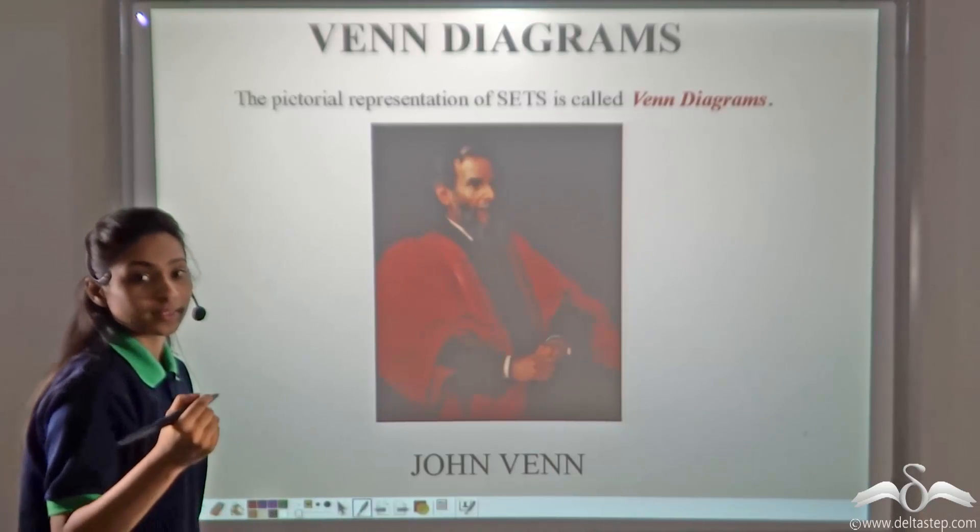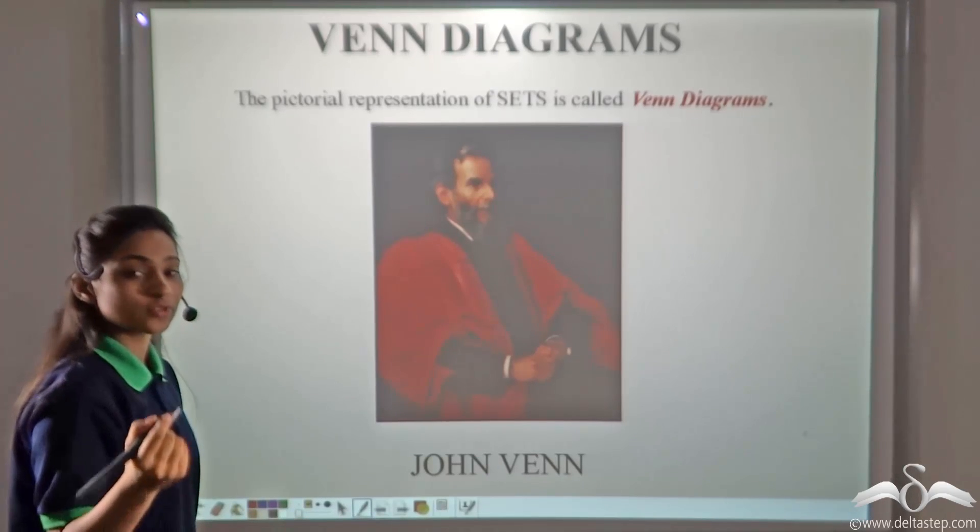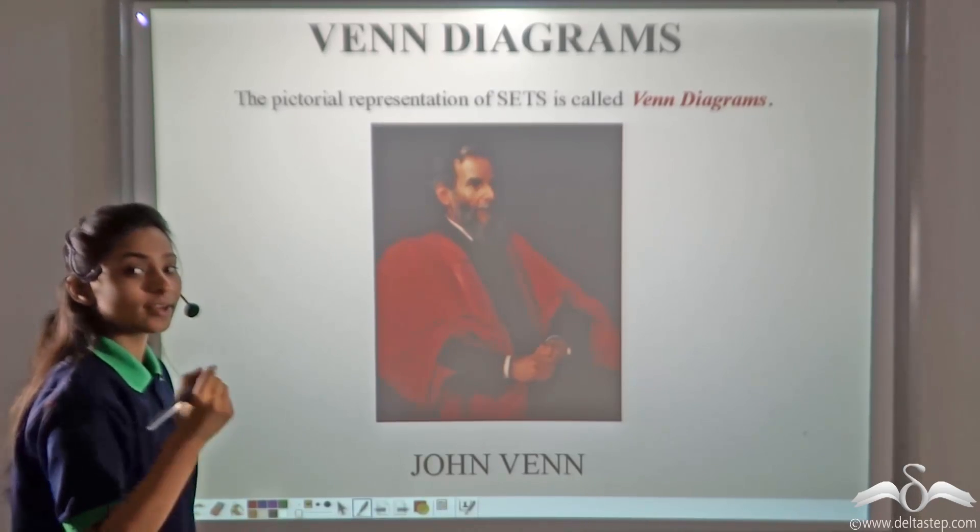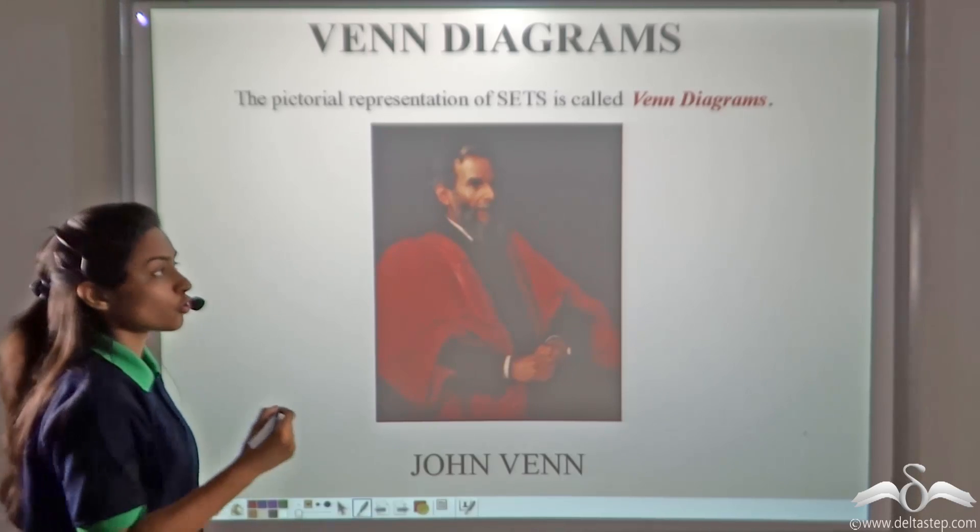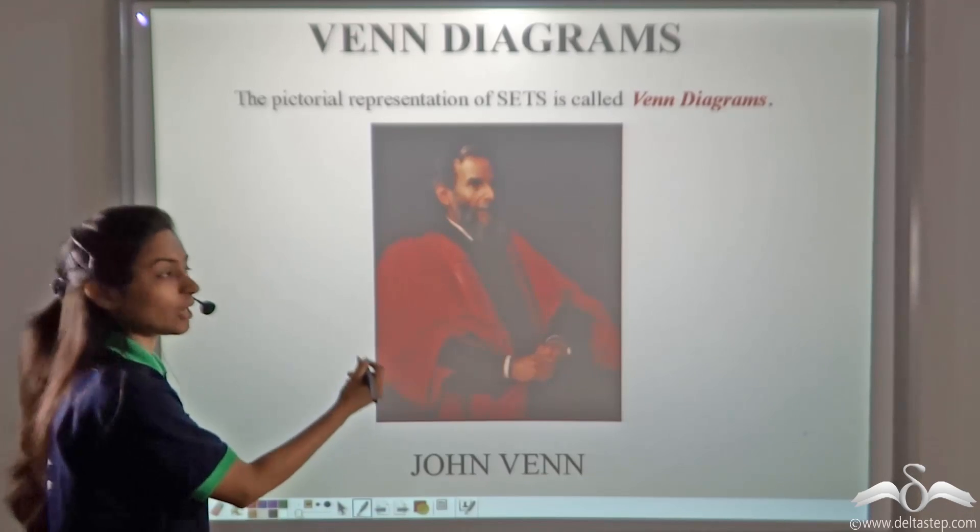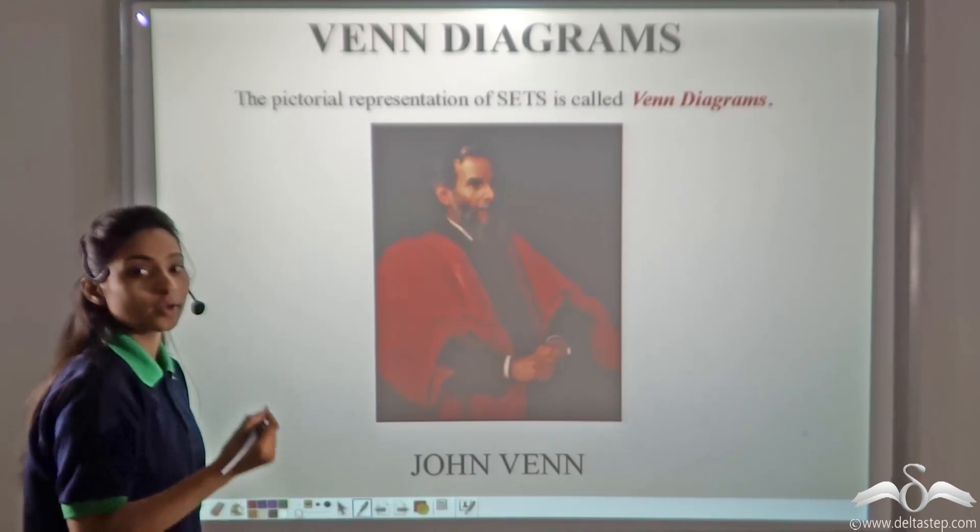John Venn was the first mathematician who used diagrams to represent sets and relationships between them. So all these diagrams are named after him and are called Venn diagrams.